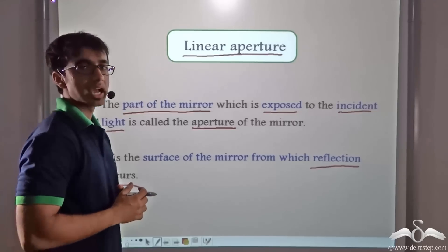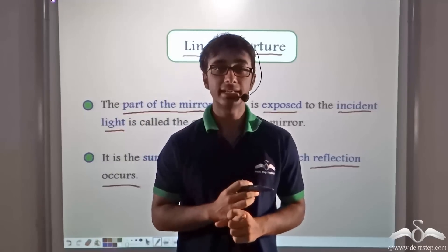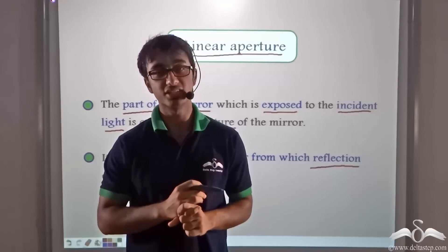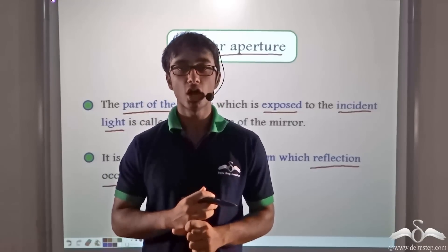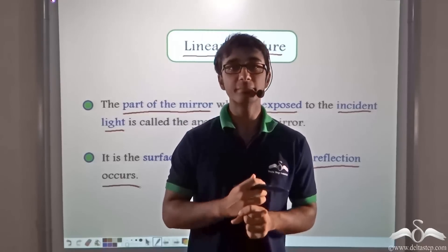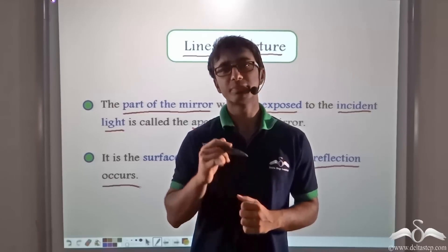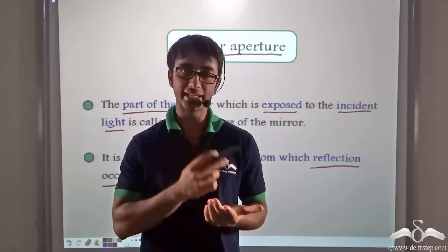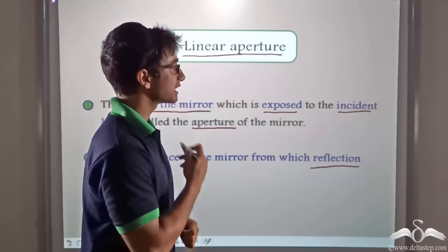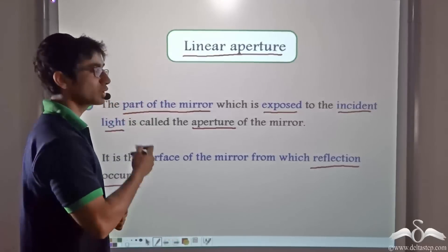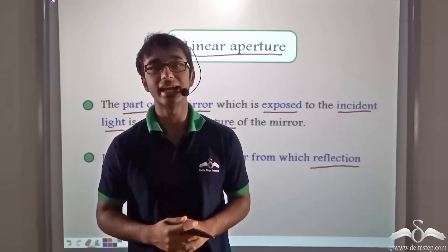Taking a quick recap: we learnt about the centre of curvature, that is the centre of the sphere of which the mirror is a part. We learnt about the radius of curvature, that is the radius of the sphere of which the mirror is a part. We also learnt about pole, the midpoint of the surface of the mirror, and principal axis, a line joining the centre of curvature with the pole. And lastly we learnt about linear aperture, the region exposed to incident light — the reflecting surface on which light falls and is reflected.